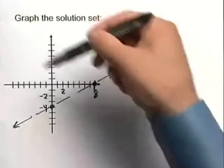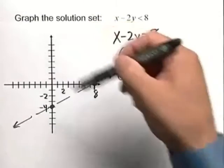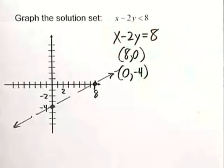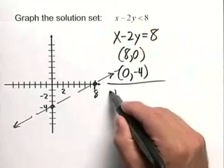Now we need to decide which side of the line, is it the upper left or the lower right, that gives us our infinite number of true statements. Well let's just take a little test point here.